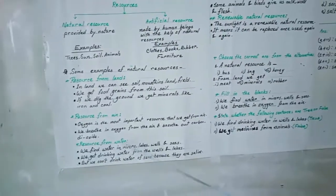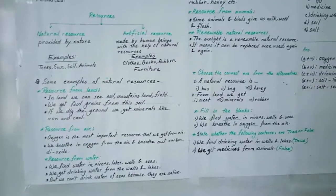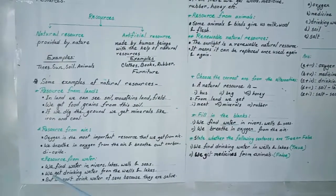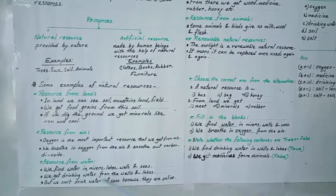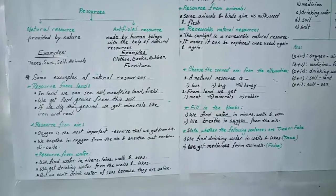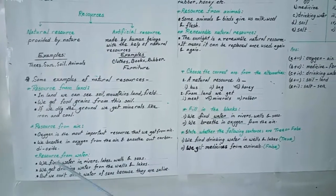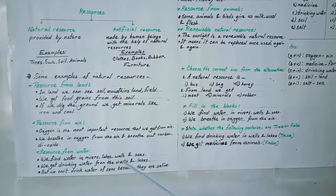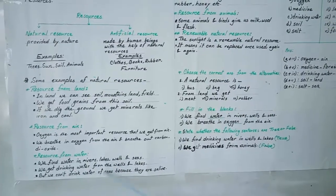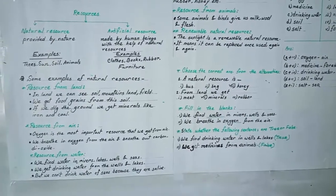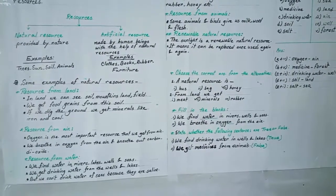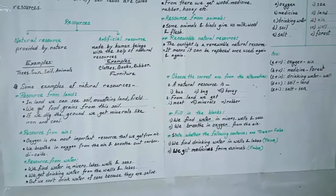Resource from water. We find water in rivers, lakes, wells and seas. We get drinking water from wells and lakes. But we cannot drink water from the seas because they are saline — that means this water contains lots of salt.